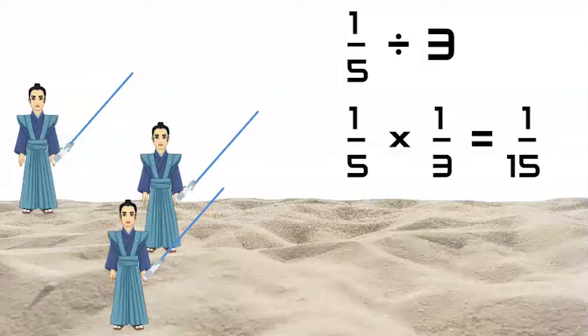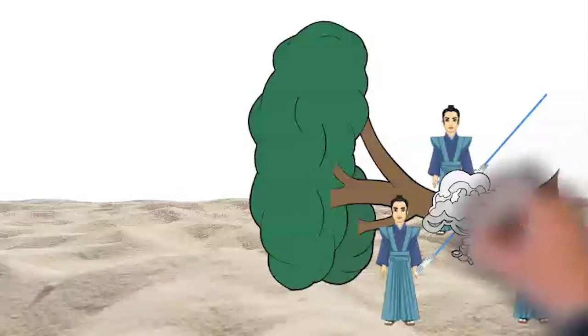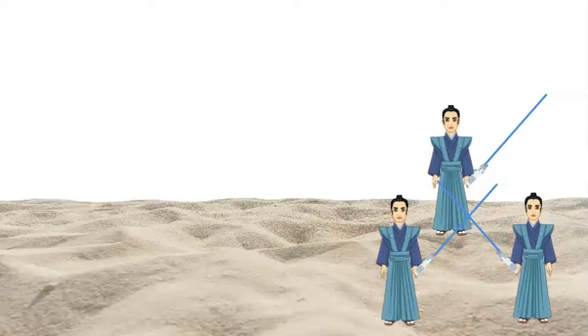So, one-fifth divided by three equals one-fifteenth. Each hero can remove one-fifteenth of the tree with their laser sword. Thank you once again to our heroes, saving the world one fraction at a time.